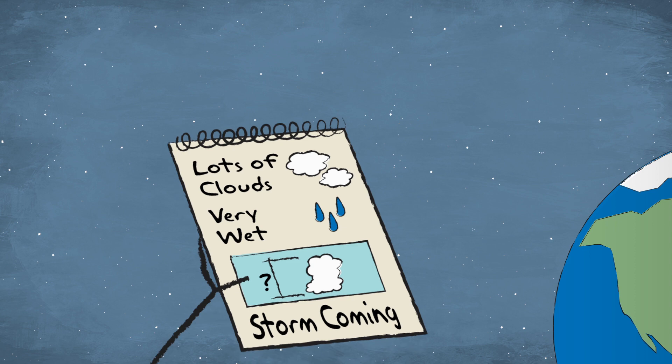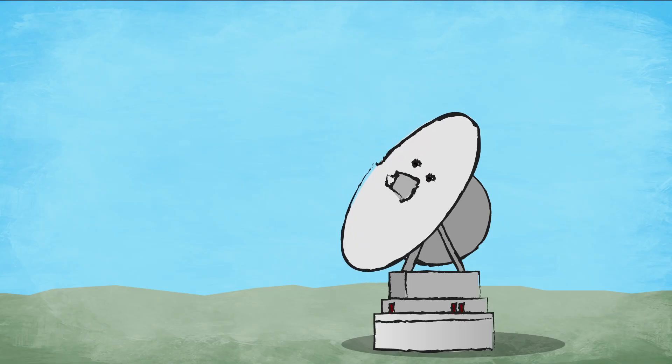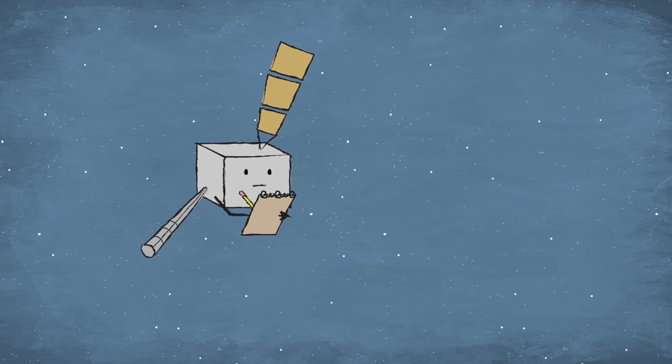But I can't keep all of this information to myself. I have to share it with weather forecasters down on Earth. A big antenna is waiting for my call. Since I'm a satellite, I send my pictures and notes in a computer language of ones and zeros.